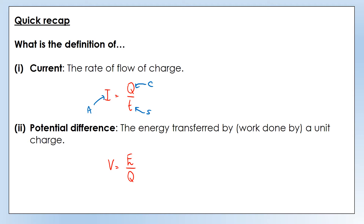Likewise, potential difference is the energy transferred by a unit of charge. This can be expressed as an equation: energy transferred per coulomb of charge. Potential difference is measured in volts. Since you haven't met this before, you might want to add that equation to your equation section of your booklets so you've got it to refer back to later on.